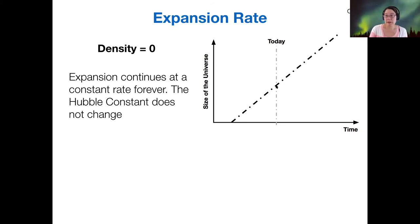And so if our density is zero, so if there's nothing in the universe, no matter, no energy, but it's just an empty space expanding at a constant rate with the Hubble constant that we measure today, then that's represented by this dashed line.